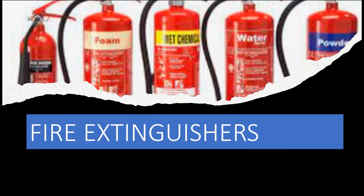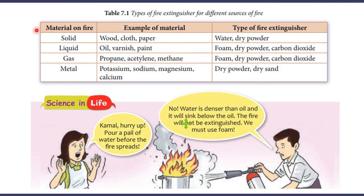There are several types of portable fire extinguishers that contain different fire-extinguishing materials based on different sources of fire. If the material on fire is a type of solid — for example wood, cloth, or paper — the types of fire extinguishers that can be used are water and dry powder.